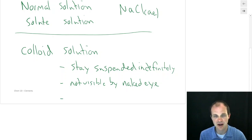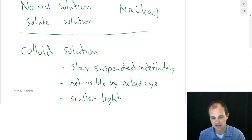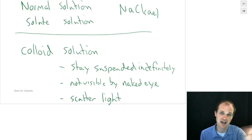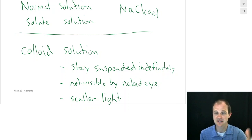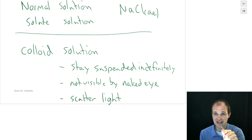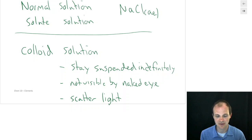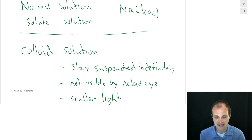A colloid has this neat property that it can scatter light. If you've ever been to laser tag, they fog it up and shine lasers through so you can see the laser beam. Normally if you shine a laser across a room, you can't see it until it hits something. Those fog particles scatter the light — it bounces off them to your eyeball. Colloids can do that too. With a very intense light like a laser pointer, you can actually see it going through the solution.